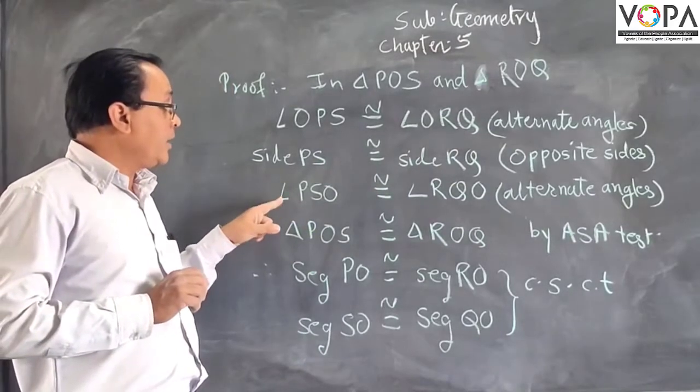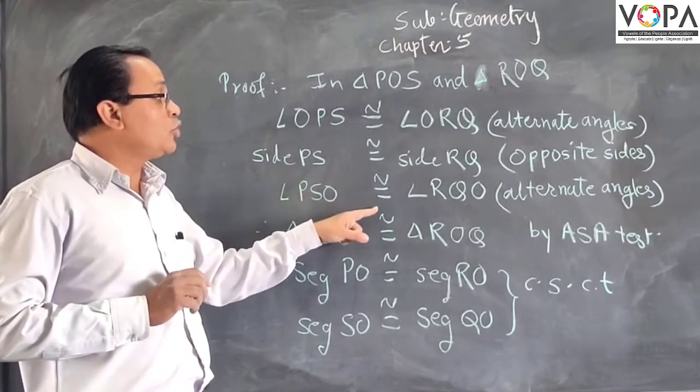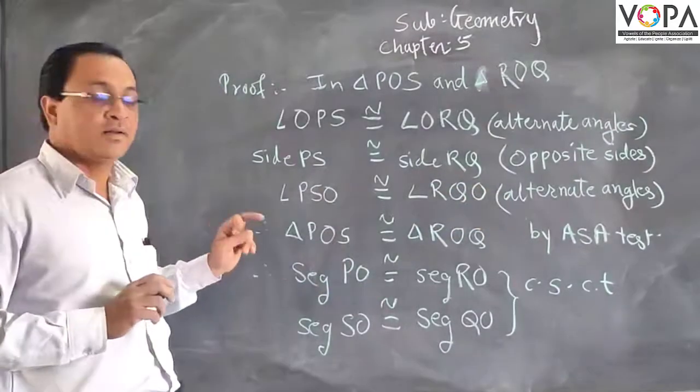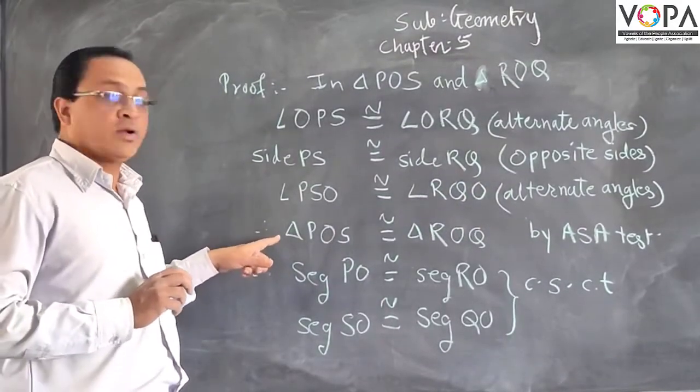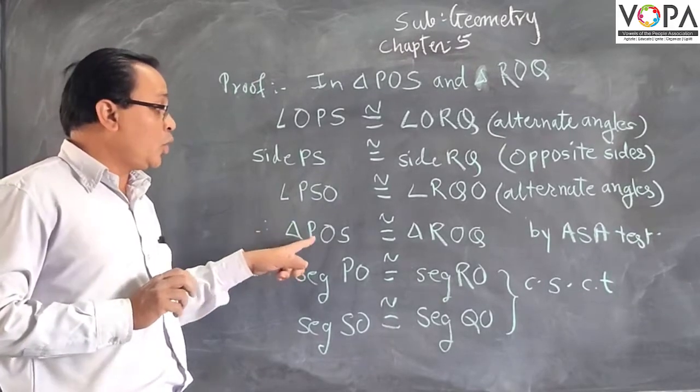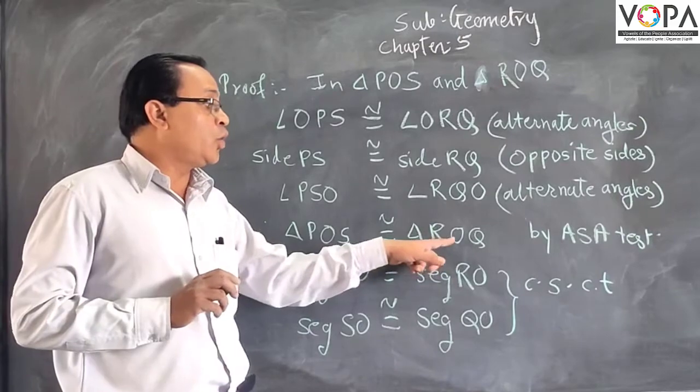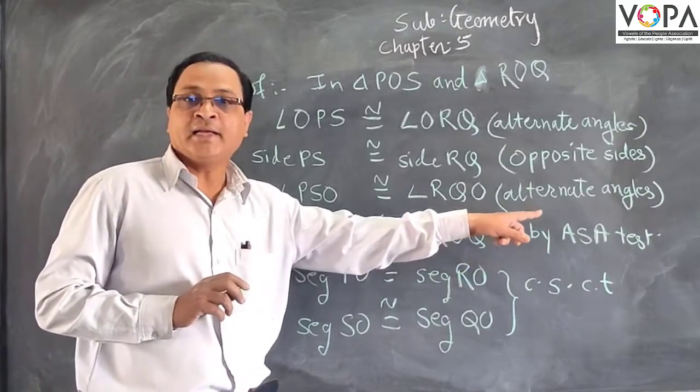Thirdly, angle PSO is equivalent to angle RQO. Again, alternate angles. Therefore, triangle POS is congruent to triangle RQO by ASA test.